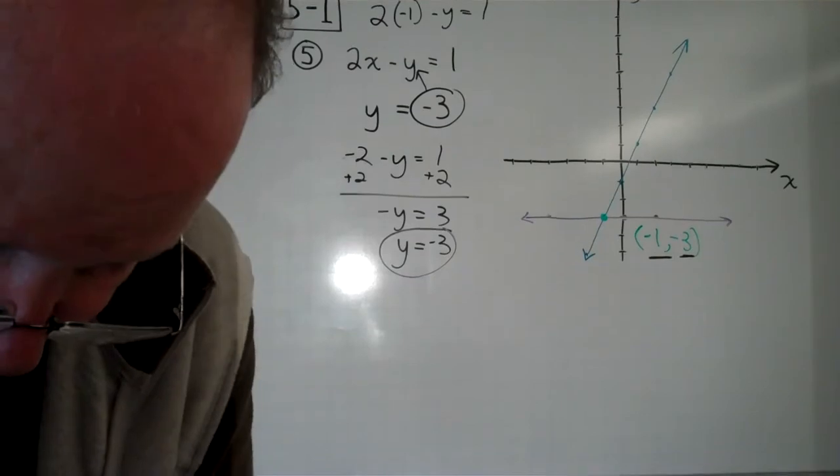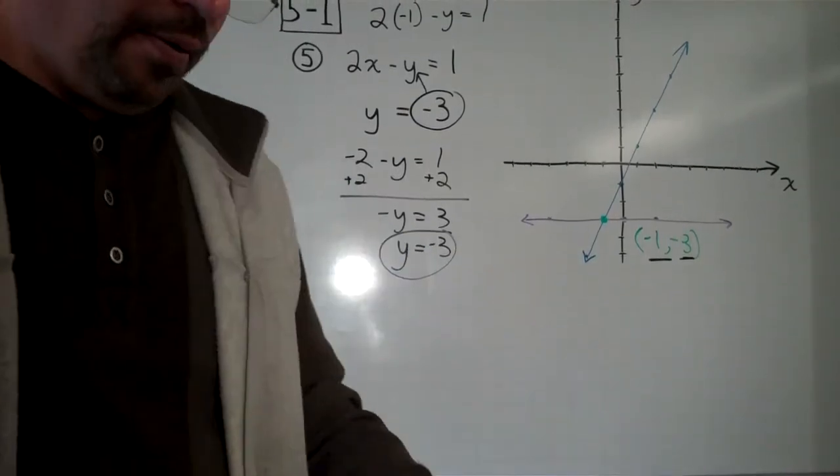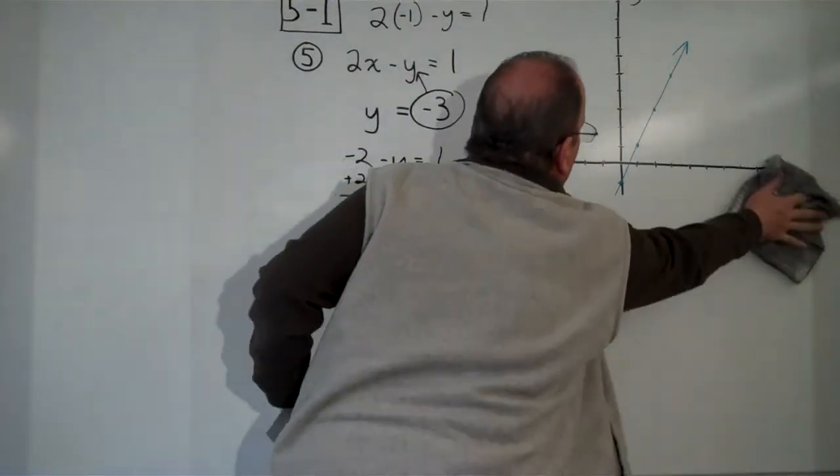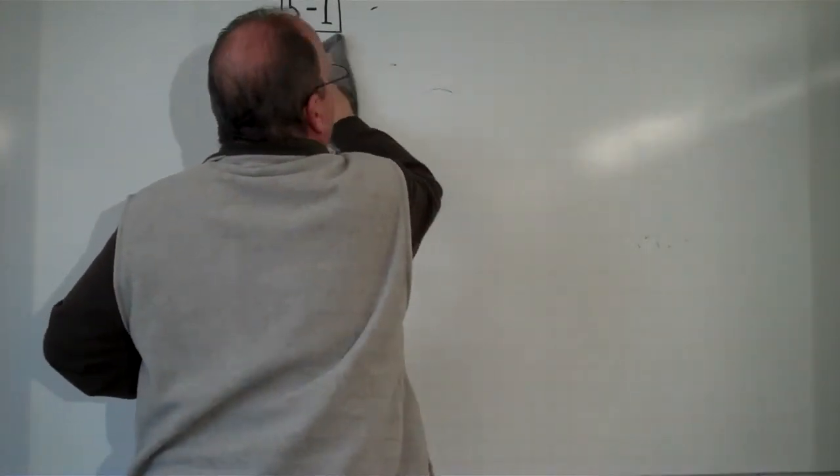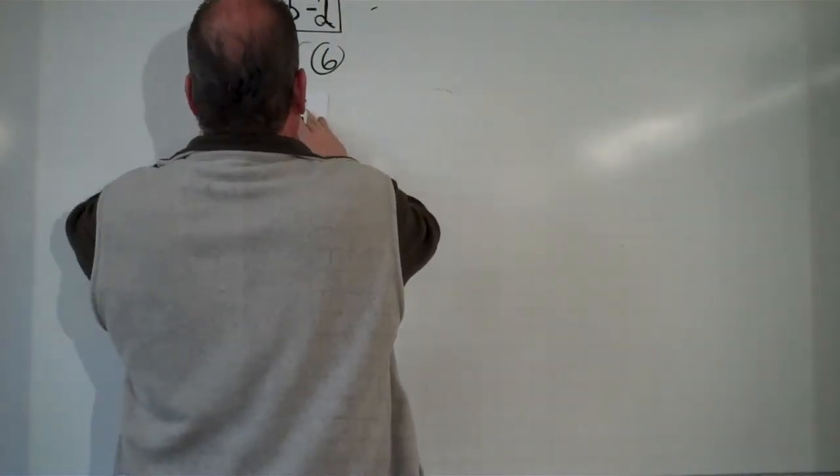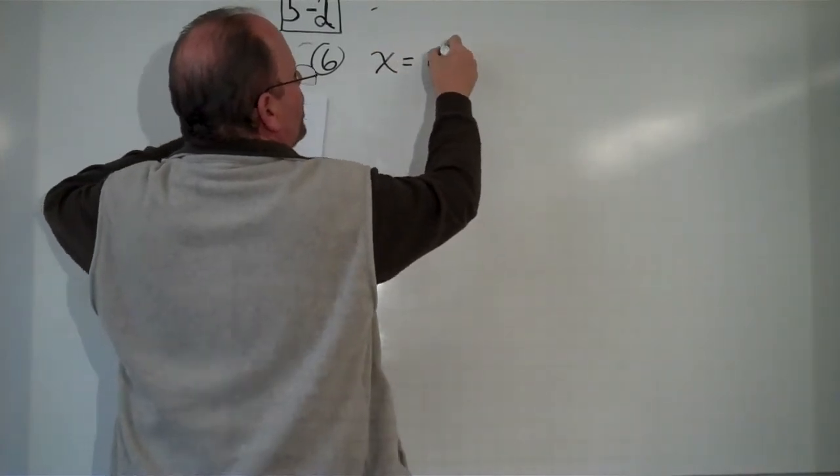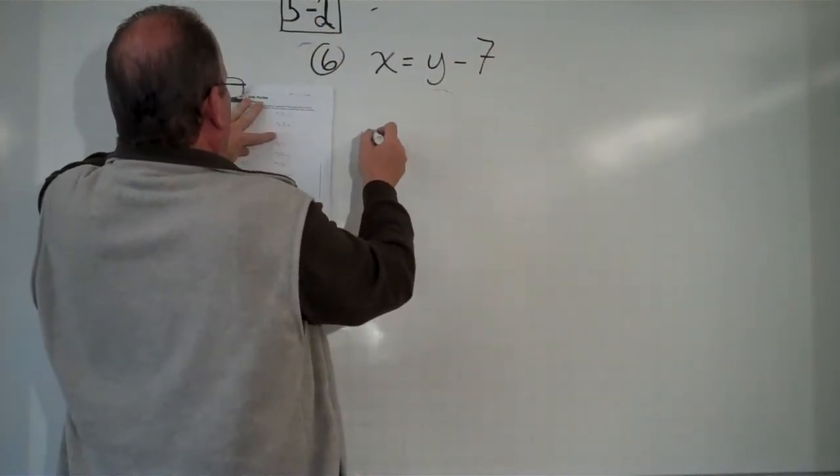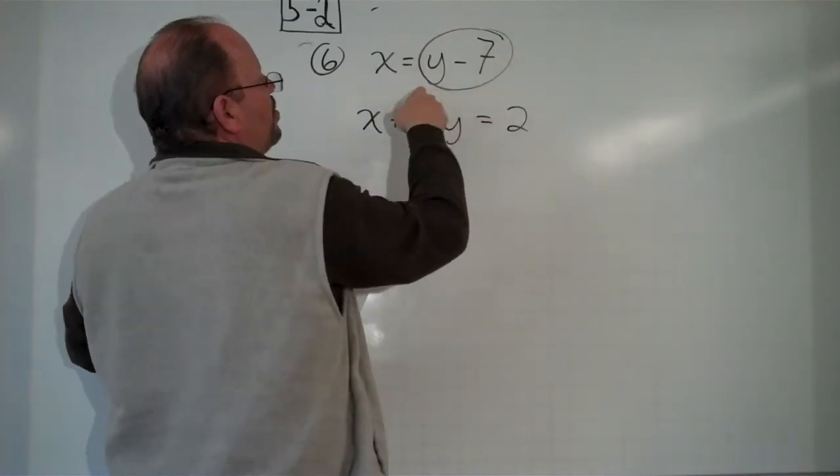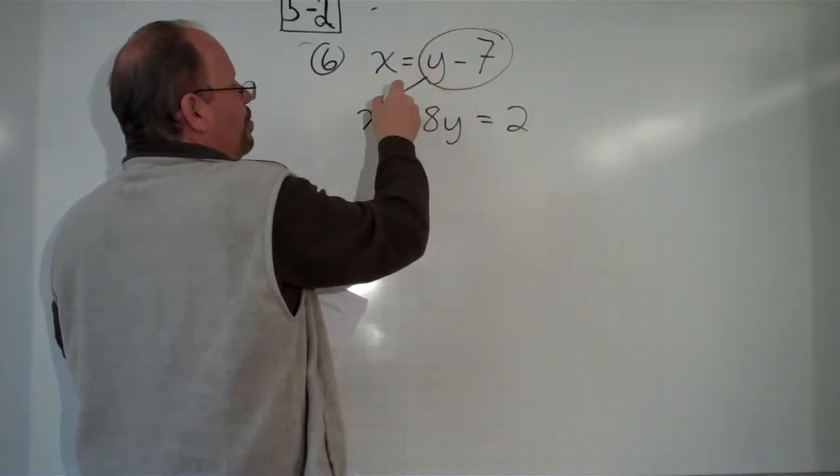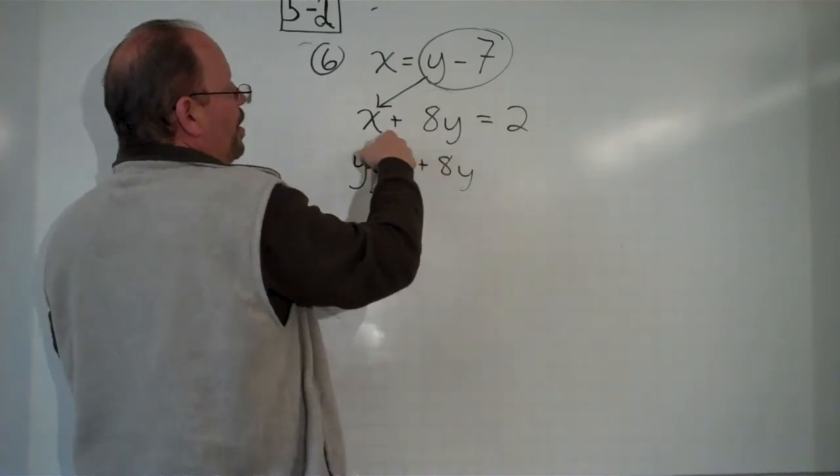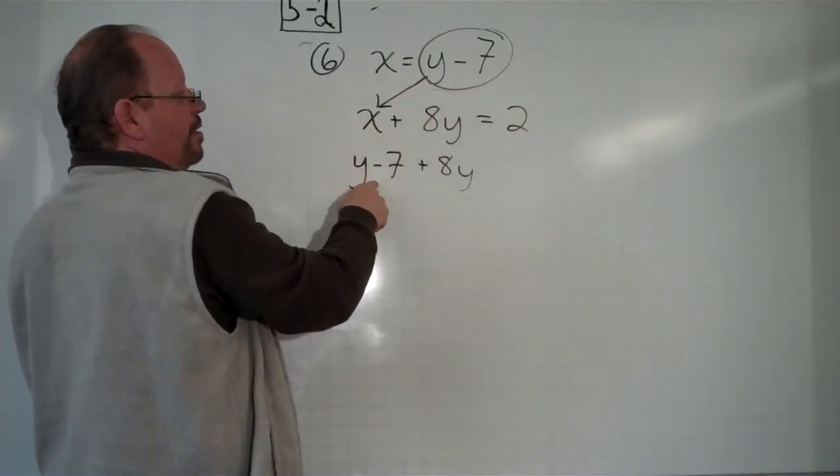Problem number 6 in 5-2. Problem number 6 says x equals y minus 7. And x plus 8y equals 2. If we substitute what x equals in place of x, we get y minus 7 plus 8y. We just take this and switch it for that. Equals 2.